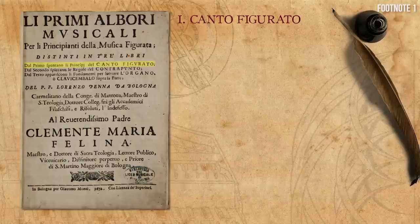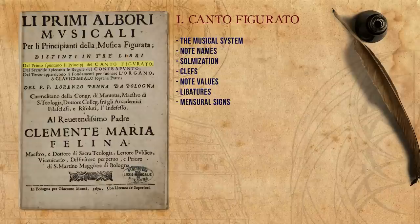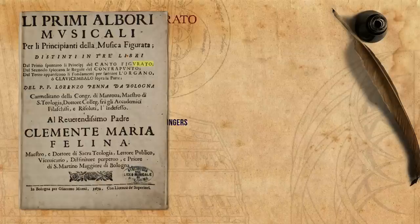Penna published his treatise in 1672 in Bologna. Its title implies that it is meant for beginners. It includes three parts, or books. The first is about canto figurato — essentially the basics of mensural music: the musical system, note names, solmization, clefs, note values, ligatures, mensural signs, basic diminutions, and some general tips for beginner singers.